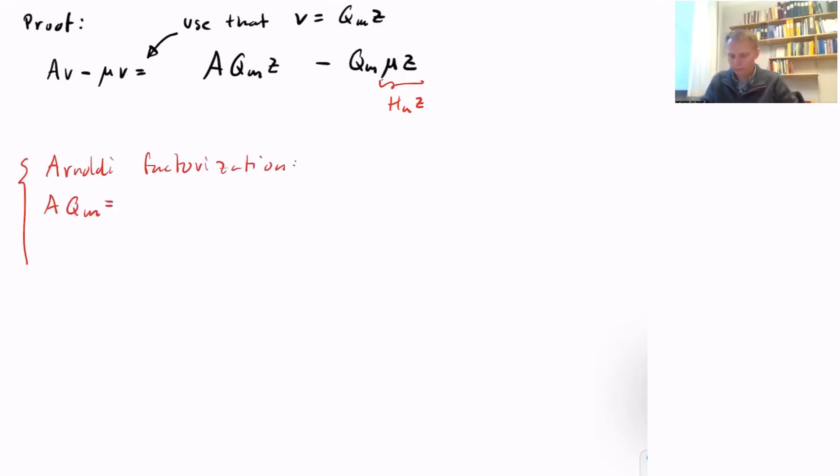Let's prove this. First, we use that V equals Q_M z. We insert that and put this in a particular order such that we can see that mu z—we have that product, which is exactly the definition of an eigenpair of H_M. So this can be replaced by H_M z.